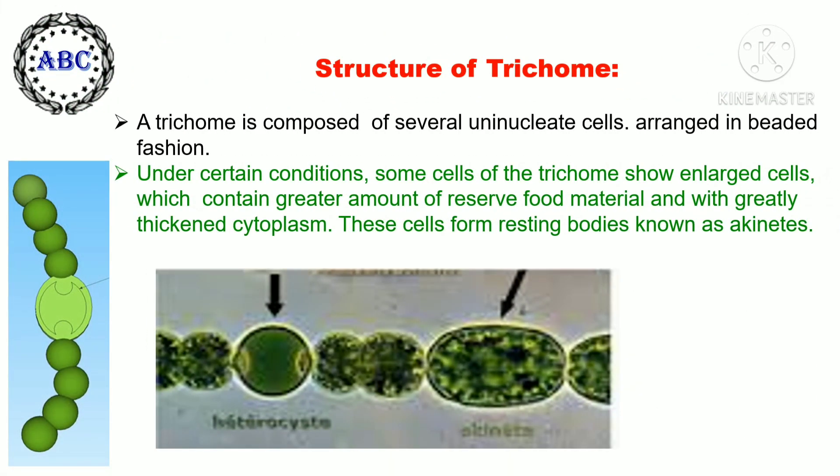The trichome is composed of several uninucleate cells arranged in beaded fashion. Under certain conditions, some cells of the trichome become enlarged, containing a greater amount of reserve food material and greatly thickened cytoplasm. These cells form resting bodies known as akinetes.